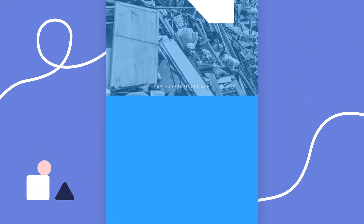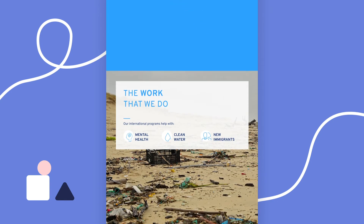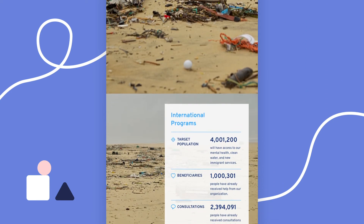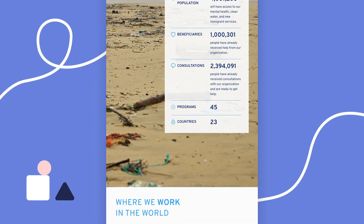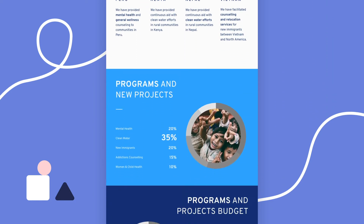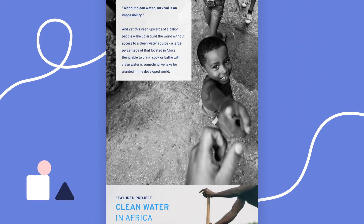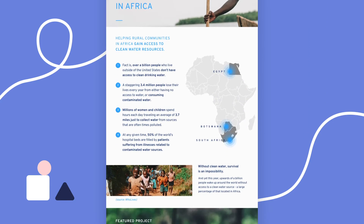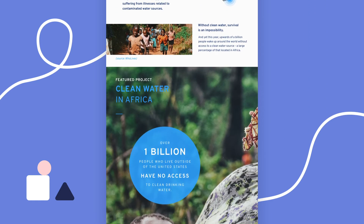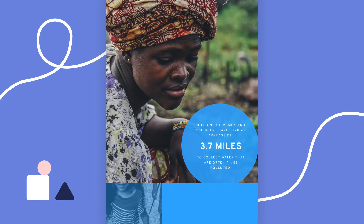Fourth, we have the informational infographic. Every infographic is informational, so what's different about this type? It uses an above-average amount of text compared to other infographic types, and it's longer and more detailed. A great example is a non-profit organization template, where you can highlight your focus areas, achievements in numbers, geographical locations, and the most critical projects.